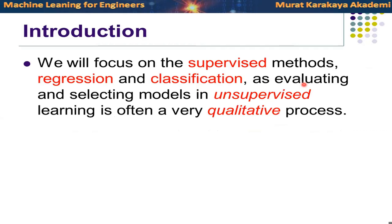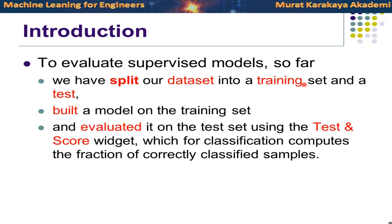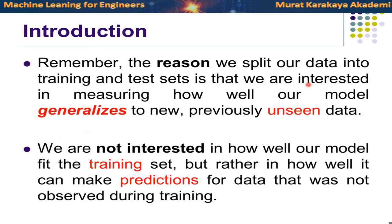Evaluating and selecting models in supervised learning often requires quantitative methods, but in unsupervised learning we need to use qualitative processes. Quantitative methods are easier to understand and evaluate. So far, to evaluate a supervised model, we split the dataset into training and test sets, build the model using the training set, then evaluate the trained model using the test set. For classification, we compute the fraction of correctly classified samples. The reason we split into training and test is to measure how well our model generalizes to previously unseen data.